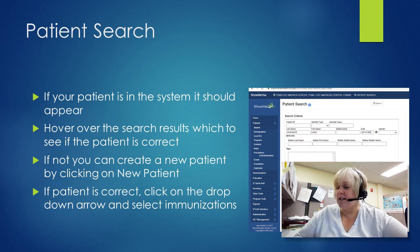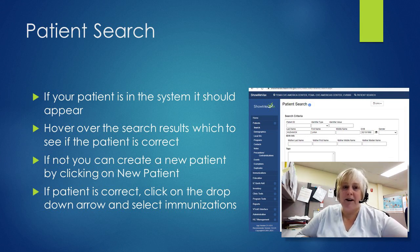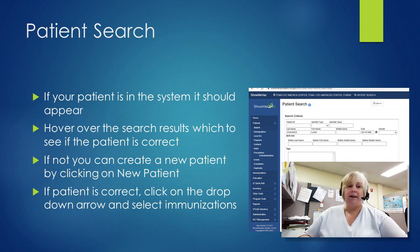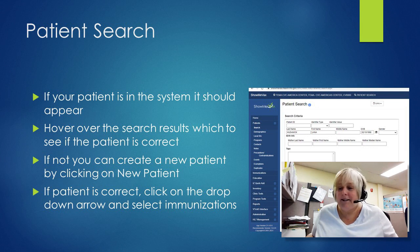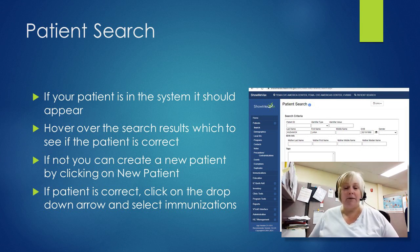If your patient is in the system, their record should appear in the search results. Hover over the results to make sure your patient is correct — you don't want to duplicate records or enter information into the wrong record. If the patient is correct, click on the dropdown arrow and select immunizations to bring up their immunization record. If the patient is not in the system, click on 'New Patient' to start a new patient record and enter someone for the first time.